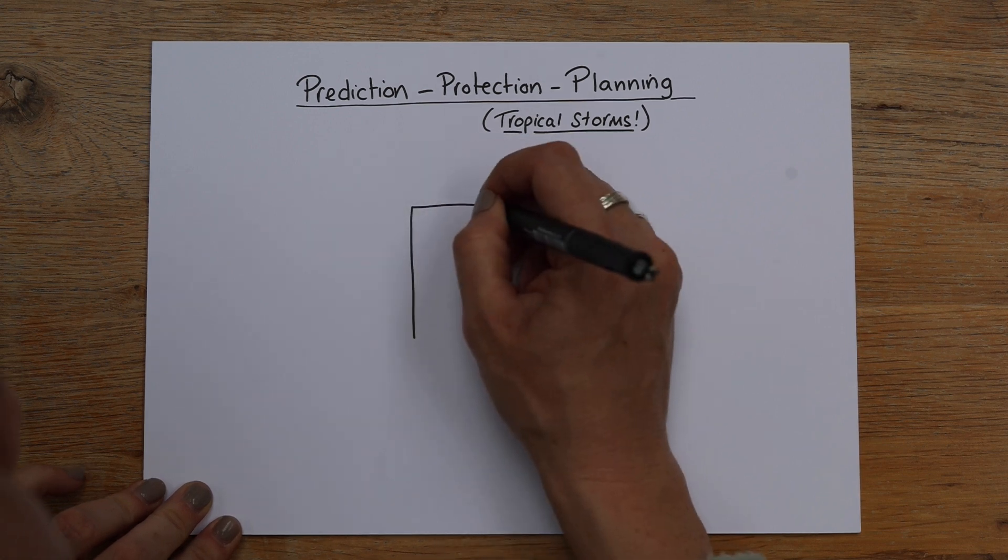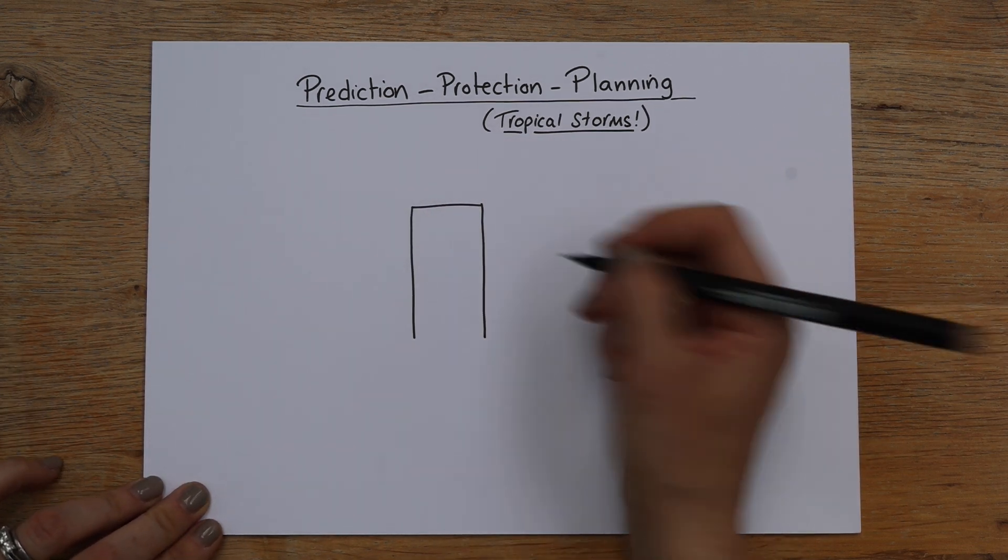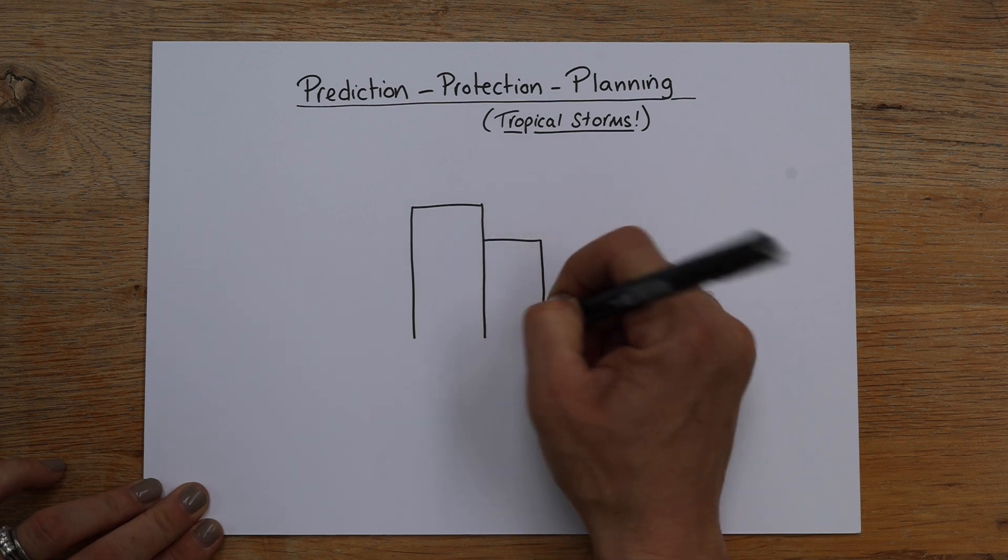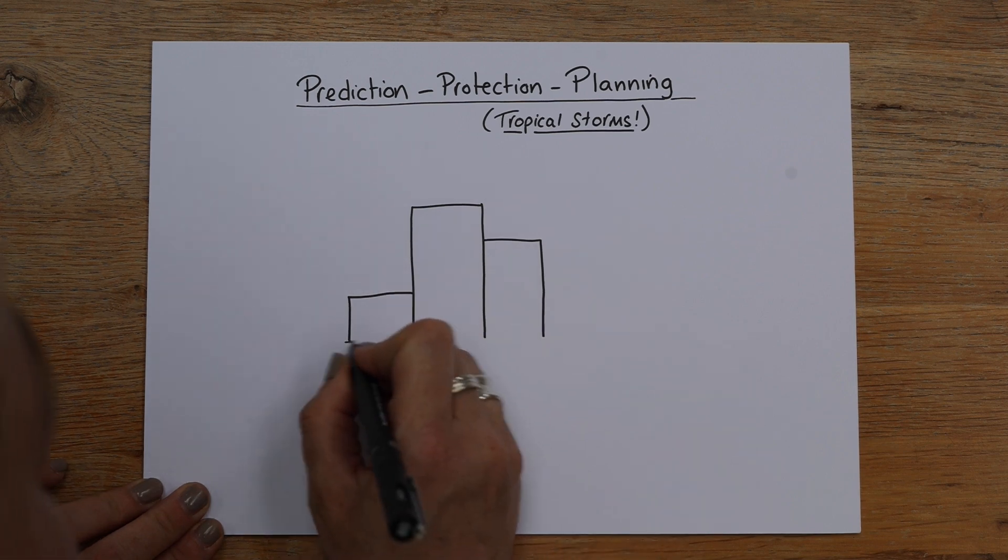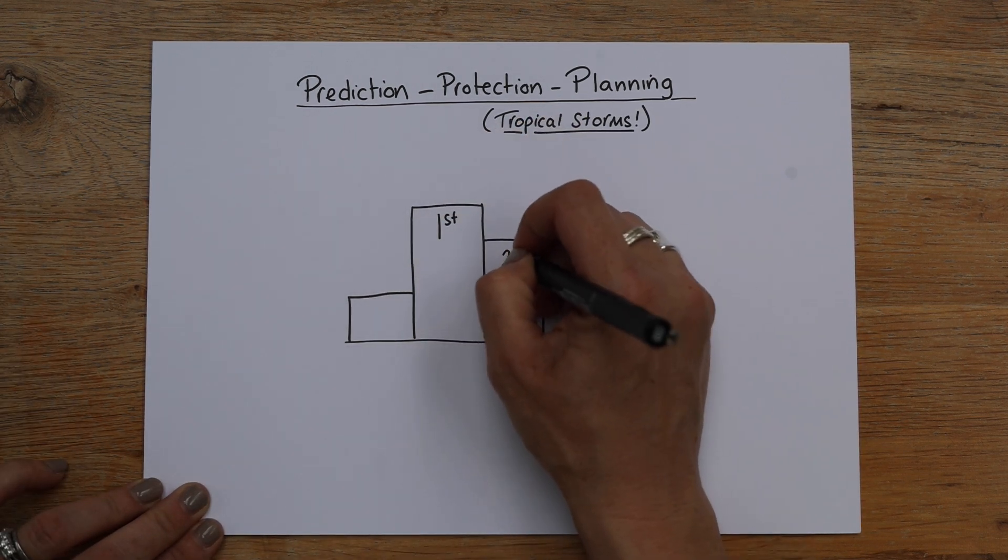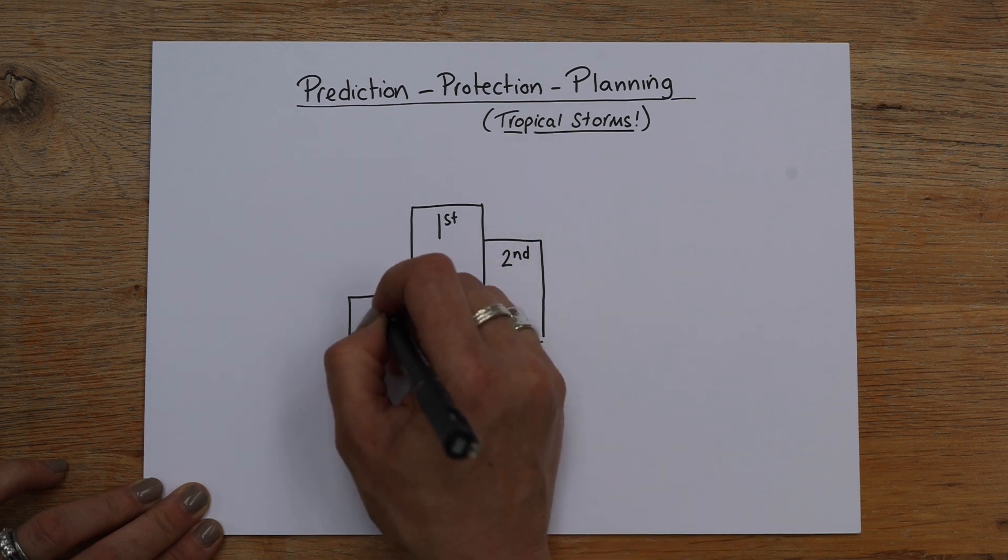So talking of which is best, if you just draw like a podium, we're going to have first, second and third. So if we write that on there, first, second and third.